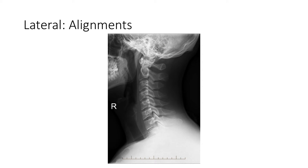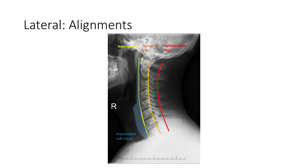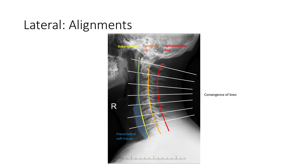For pre-vertebral tissue and alignment, we will use the five-line assessment, which consists of four longitudinal lines and the lines of convergence. The first line is the line of soft tissue. From C1 to C5, the soft tissue should be less than half of the vertebral body width. From C6 and below, the soft tissue should be less than a full vertebral body width. We also need to look at the anterior line formed by the anterior ligament, the posterior line representing the posterior ligament, and the spinal laminar line formed by the anterior edge of the spinous processes. A line should be drawn down each spinous process, which should converge posteriorly. If there is divergence, we will suspect a disruption of the posterior column.